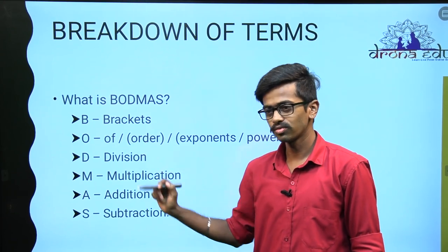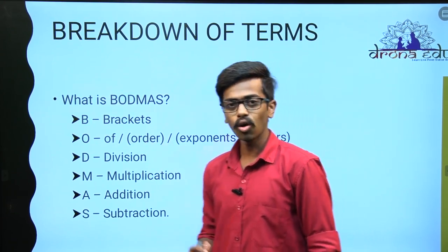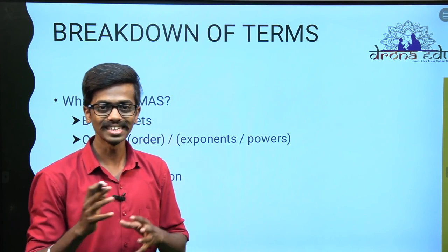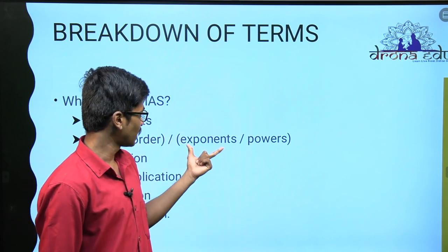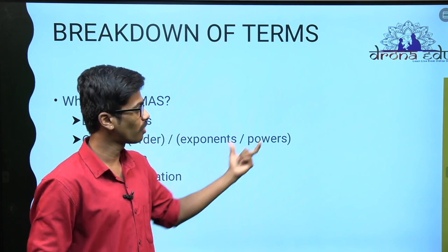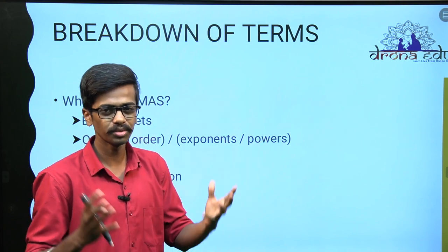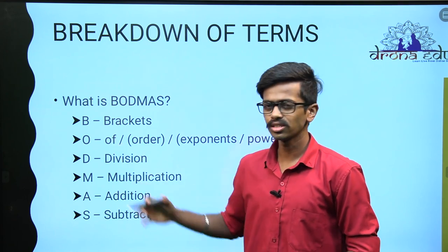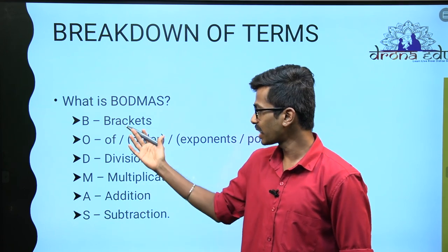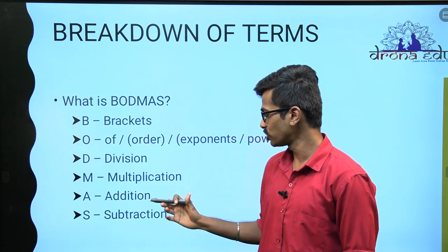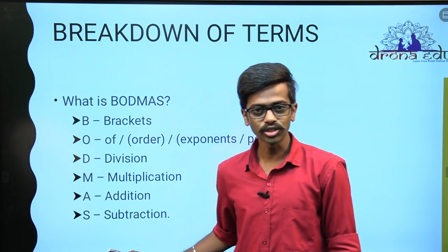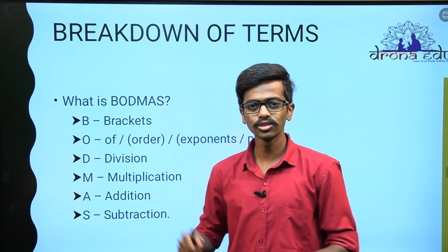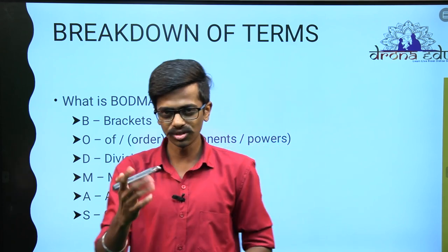But this is not just 'of.' There is an order — and order means exponents and powers: whatever power the number or variable has, it depends upon that. For now we will just keep it as 'of,' so that is BODMAS: Brackets, Of, Division, Multiplication, Addition and Subtraction. Always keep in mind that this is the order you have to follow while solving the sums. When we solve a sum or two, you will get the hang of it.